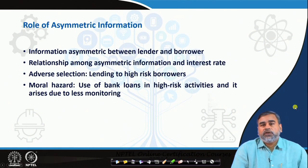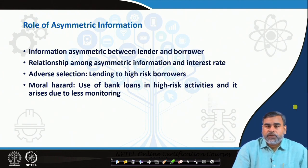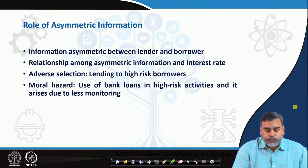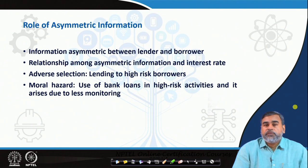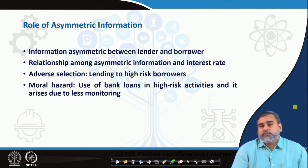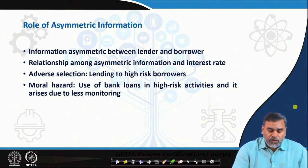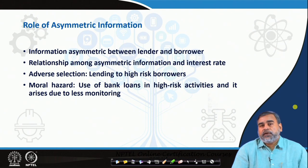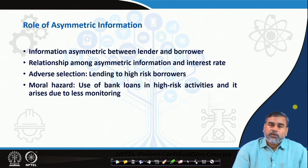Whenever commercial banks provide a loan, asymmetric information plays a very significant role. In the area of finance and banking, there is always an information gap between buyers and sellers — whatever information the seller has may not be what the buyer has. In that context, transaction cost increases or the price increases. To avoid this discrepancy, market mechanisms and regulators always try to reduce that particular gap. In the same line, there is always asymmetric information between the lender (the bank) and the borrower (a company or individual).